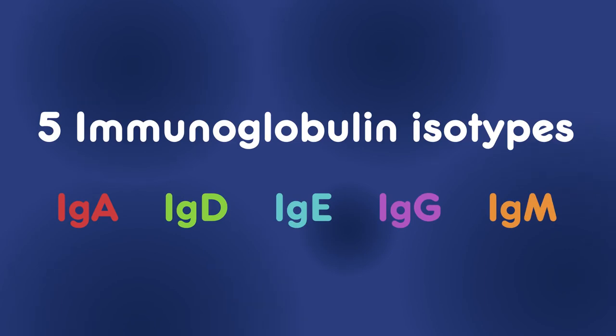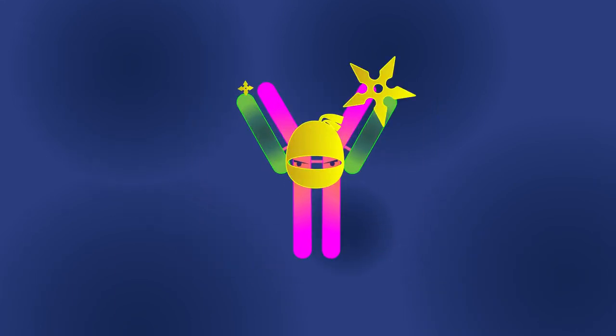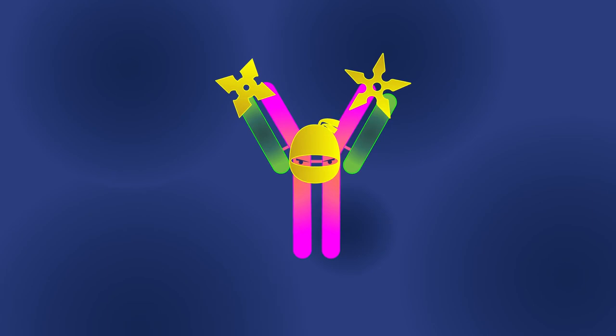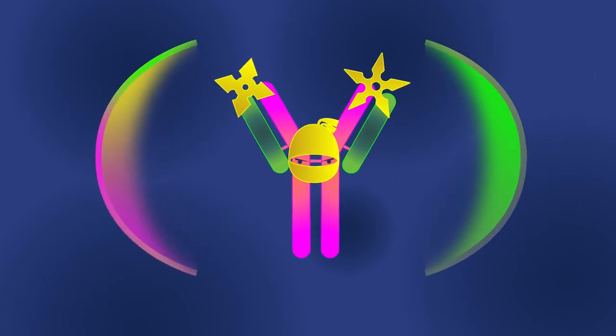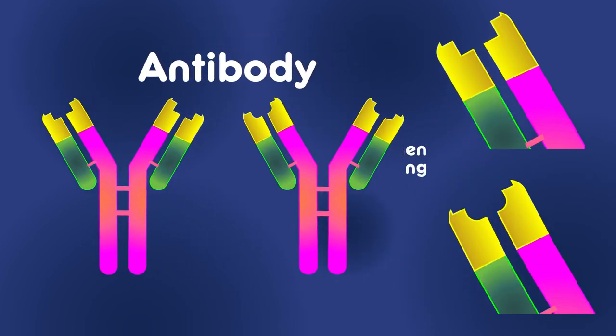Antibodies are cloned in laboratories. To discover how and why, watch this video. So there we have the ninja Y-shaped antibodies protecting us from foreign invading antigens. Antibodies are nearly identical except for slightly different shaped antigen binding sites.